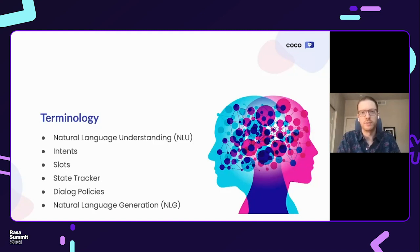The dialogue policy's role is then to take the state tracker output and predict the best next action for the conversational agent to take — in this case, that might be to suggest a restaurant. The natural language generation component, or NLG, then converts the action into a response, such as 'I found a few Peruvian places near you.'